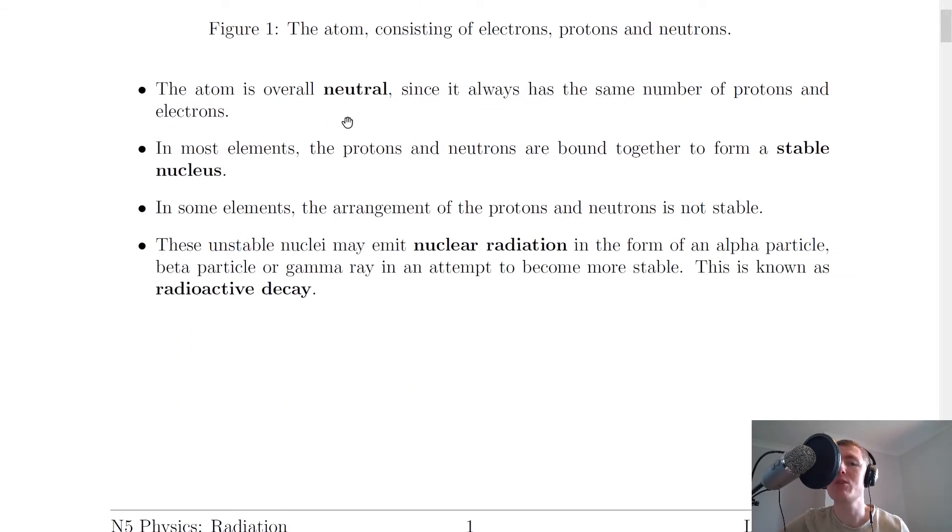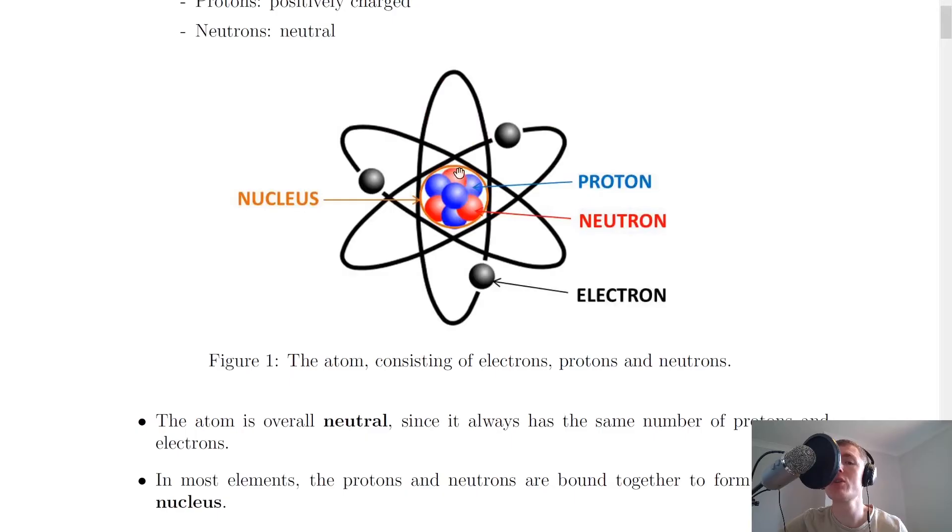Moving on it says here that the atom is overall neutral since it always has the same number of protons and electrons. So the atom is said to be neutral if the number of protons in the nucleus matches the number of electrons outside of the nucleus.